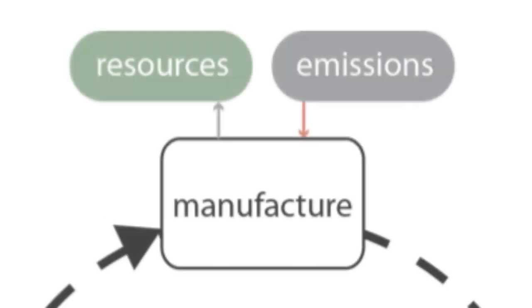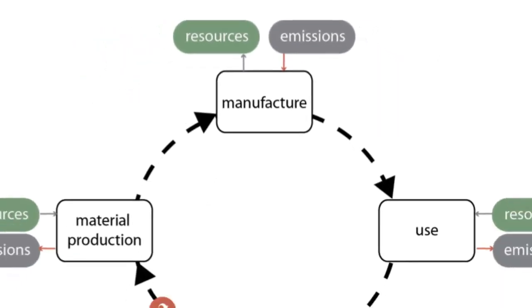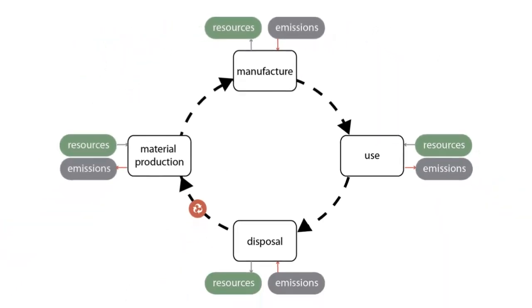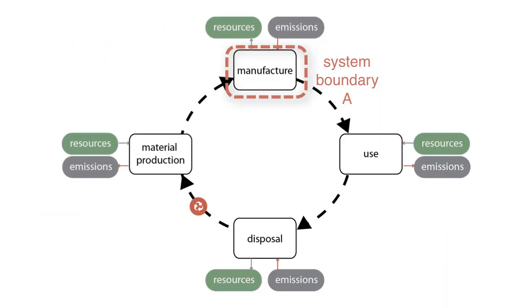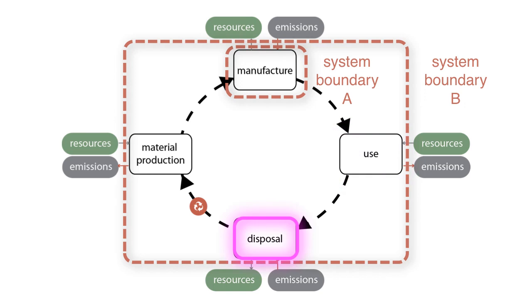A holistic view would consider not just manufacture, but the entire life cycle. For system boundary B, all steps of the life cycle — material production, manufacture, use, and disposal — lie inside the system.